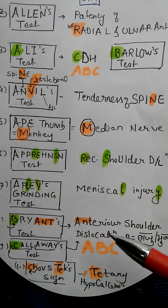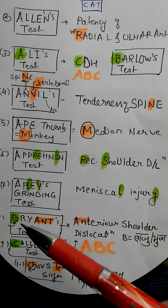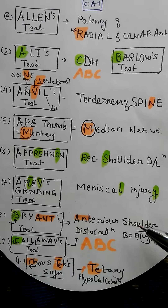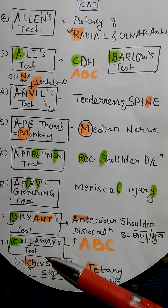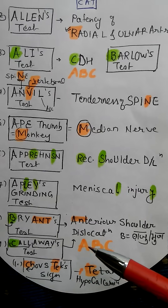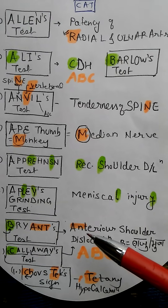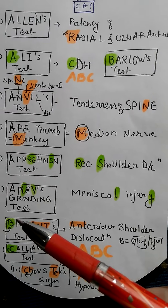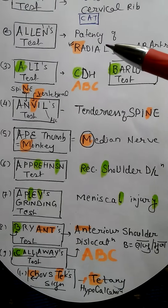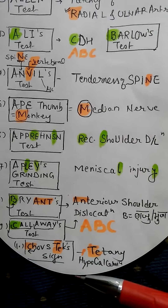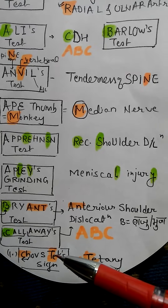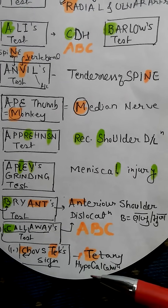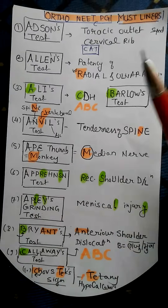In Hindi, B is Bhuja or Bahu, which in English means shoulder. Callaway's test is also used for anterior shoulder dislocation — A, B, C: ABC. Here also ABC, so you can remember both together. Chvostek's sign — TE for tetany and CH for hypocalcemia.